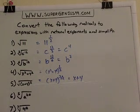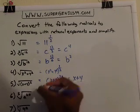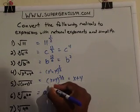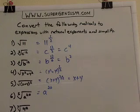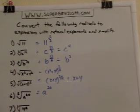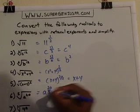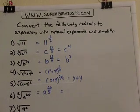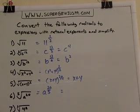The next one. A to the 20th. The denominator will be 5 because the index is 5. And 20 divided by 5 is 4, so that's A to the 4th.